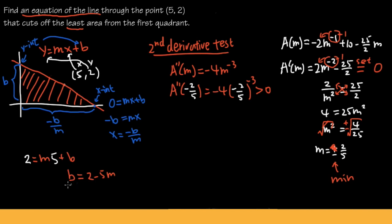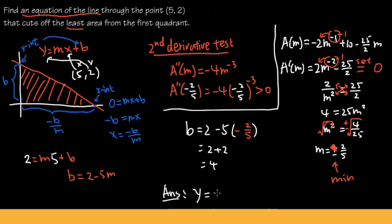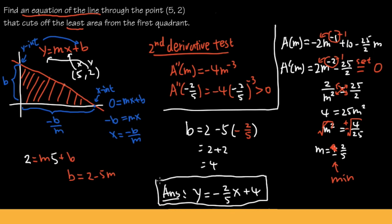Now we find b: b = 2 - 5(-2/5) = 2 + 2 = 4. So m = -2/5 and b = 4. The equation of the line that cuts off the least area from the first quadrant and passes through (5, 2) is: y = -2/5 · x + 4.